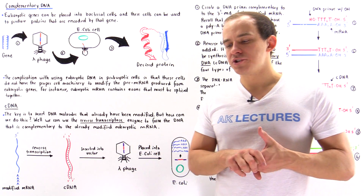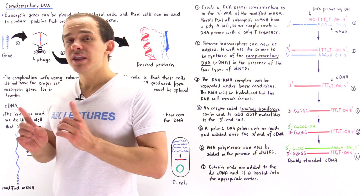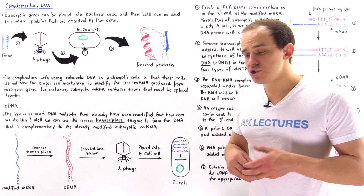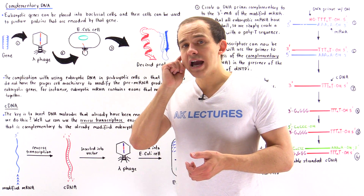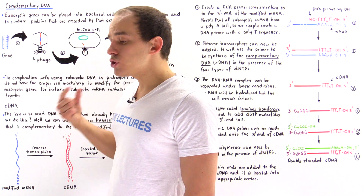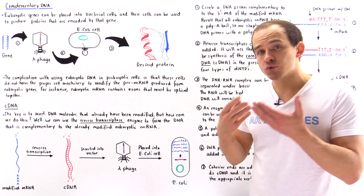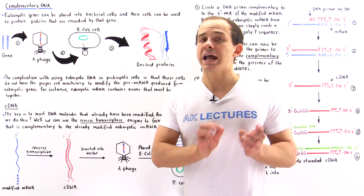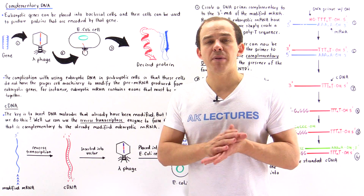Suppose we have a prokaryotic gene and we want to obtain many copies of the proteins encoded by that specific gene. Recombinant DNA technology allows us to carry out this process. All we have to do is take that prokaryotic gene, place it into the appropriate vector, then introduce that vector into a bacterial cell. The bacterial cell will use its ribosomes and cell machinery to synthesize the proteins encoded by that particular gene, and then we can extract, collect, and study those proteins.